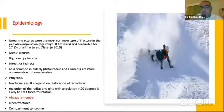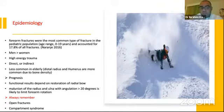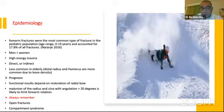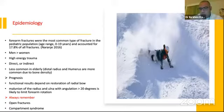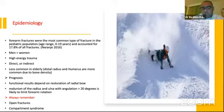Regarding the epidemiology of this injury: forearm fractures are the most common type of fracture in the pediatric population, in the age range from 0 to 19 years old. They account for about 17.8% of all fractures, as stated by Naranj in 2016. We usually see this fracture in men more than women. High energy trauma is more common in the younger population. The mechanism can be direct — a direct blow — or indirect, like a fall. It is less common in the elderly, where distal radius and humerus fractures are more common due to bone density.